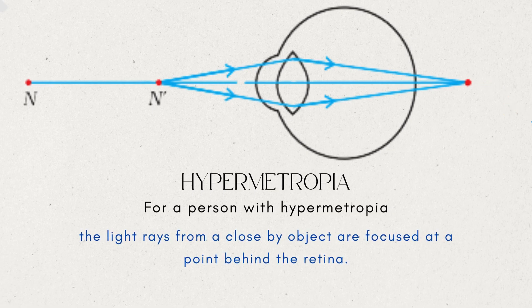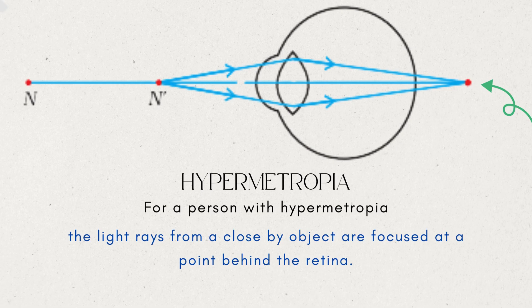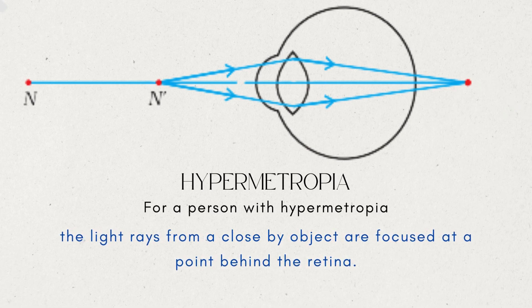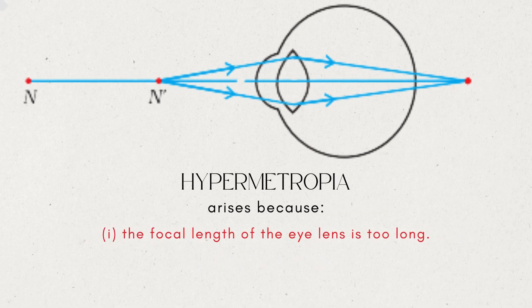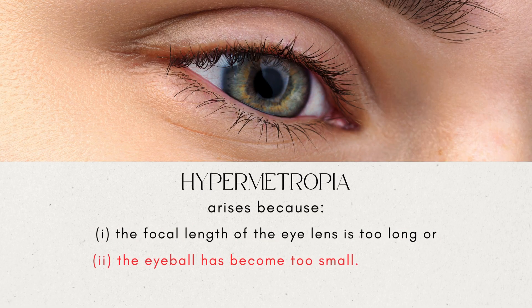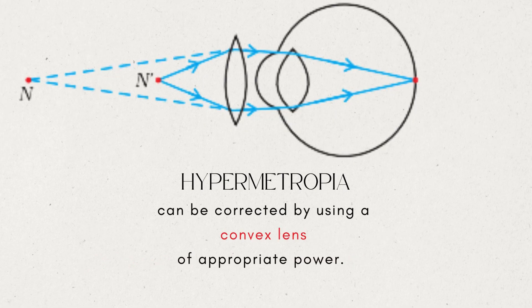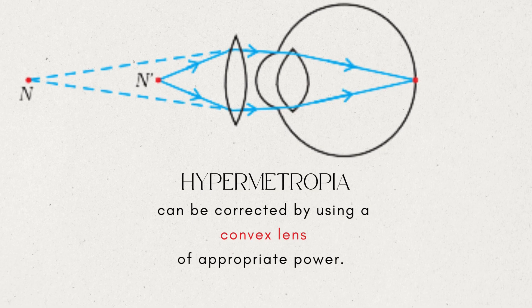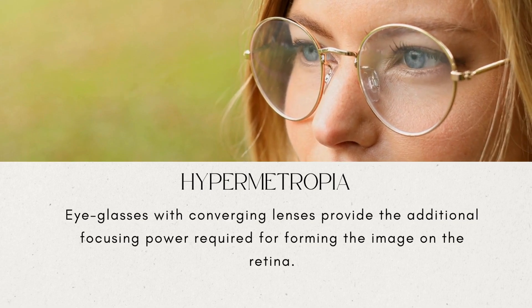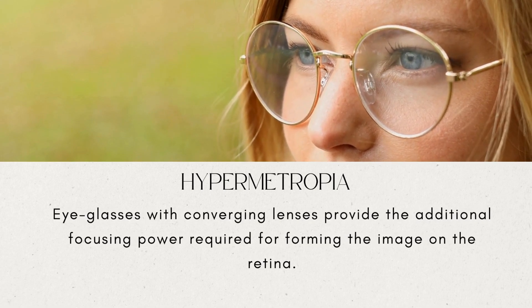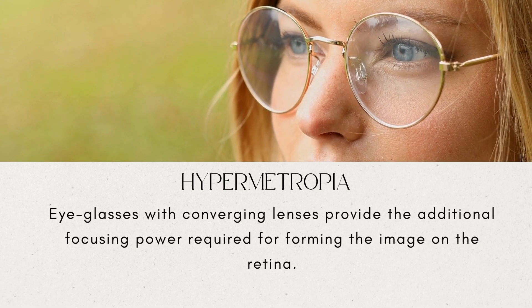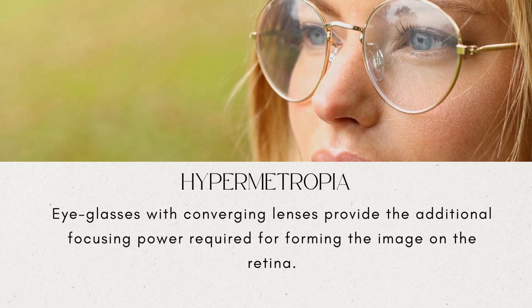This is because the light rays from a close-by object are focused at a point behind the retina. This defect arises either because the focal length of the eye lens is too long or the eyeball has become too small. This defect can be corrected by using a convex lens of appropriate power. Eye glasses with converging lenses provide the additional focusing power required for forming the image on the retina.